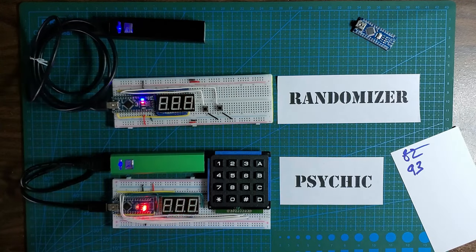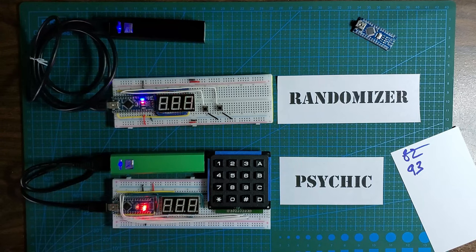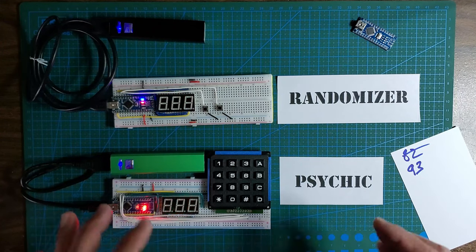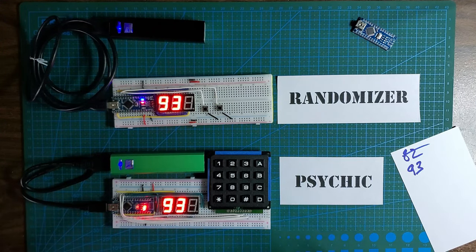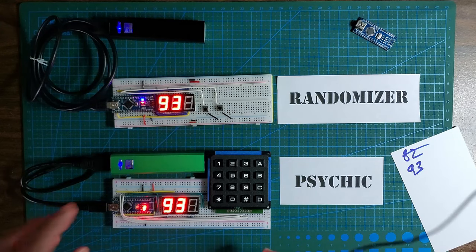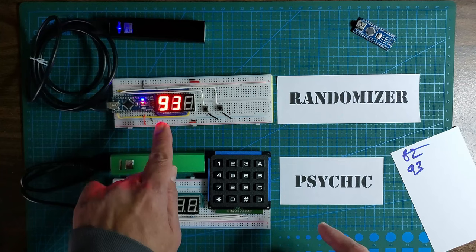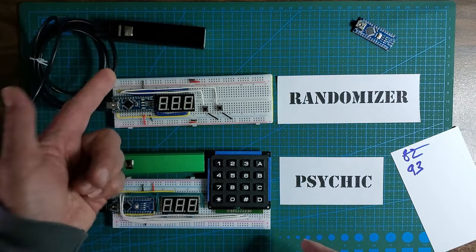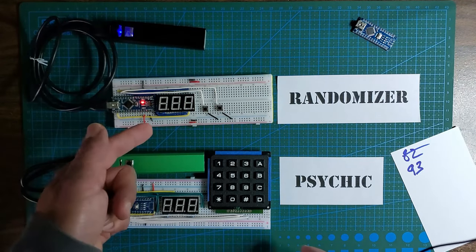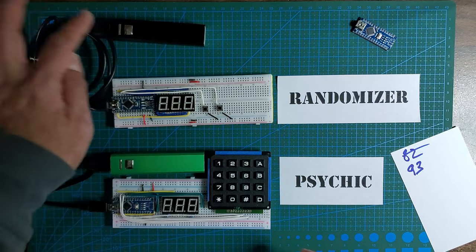Now I'm gonna break one of the rules of magic - don't show a trick more than once - but I think this makes it even more amazing. We're gonna power off the psychic while we pick another random number. For good measure, I'm also going to turn that off and turn it back on. Every time it comes on you can see it comes up with a different random number.